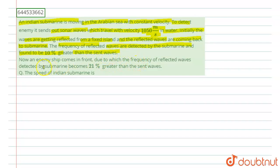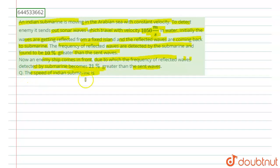Now, an enemy ship comes in front, due to which the frequency of the reflected wave detected by the submarine becomes 21% greater than the sent wave. In the first part of this question, we have to find the speed of the Indian submarine.